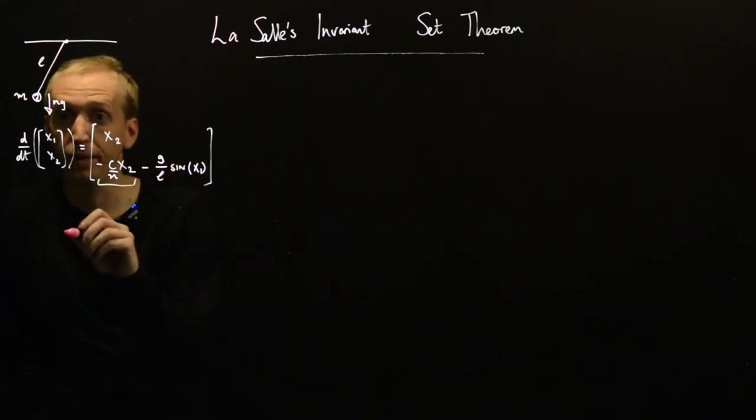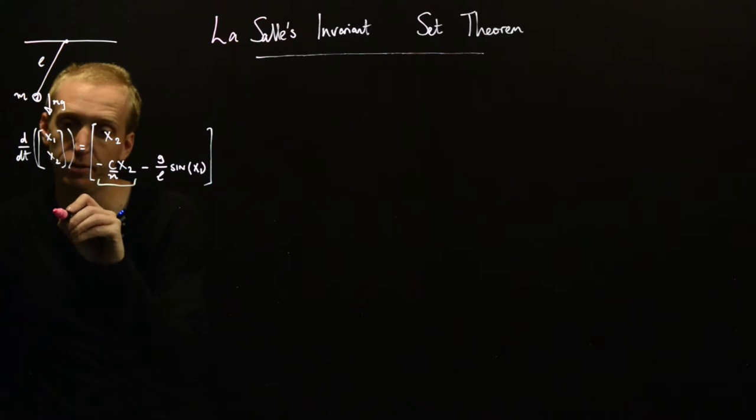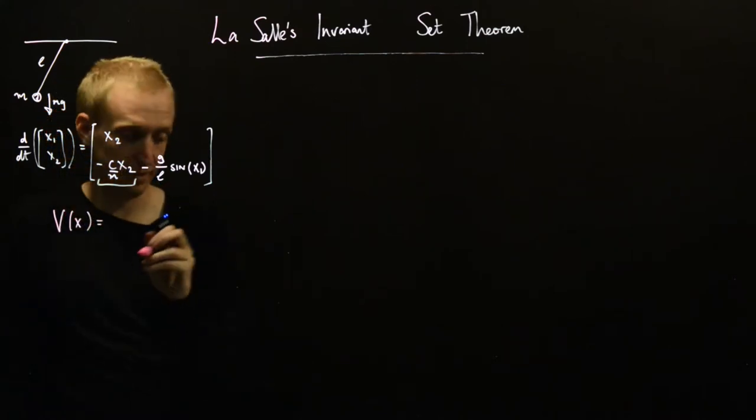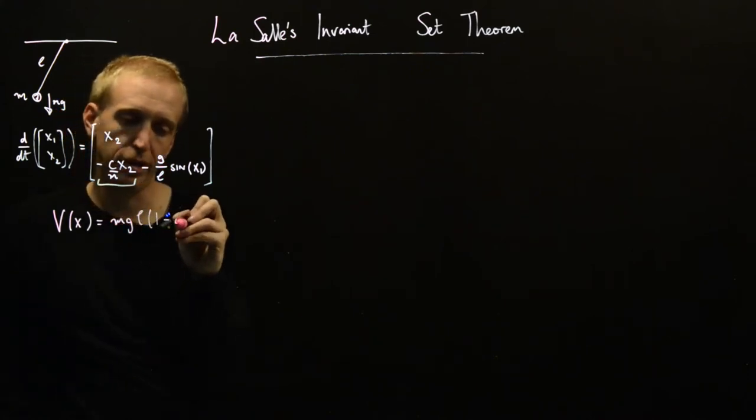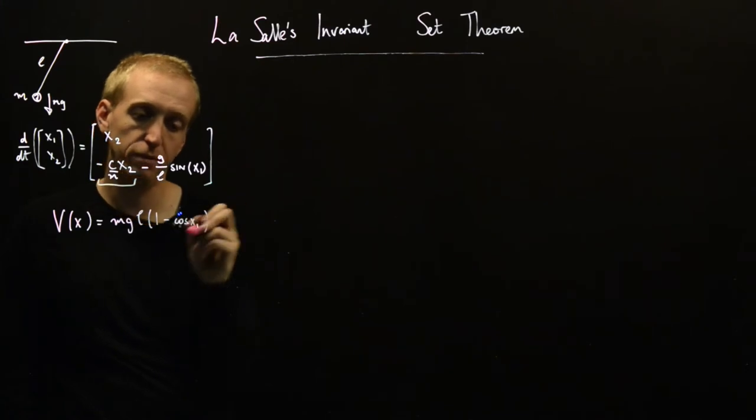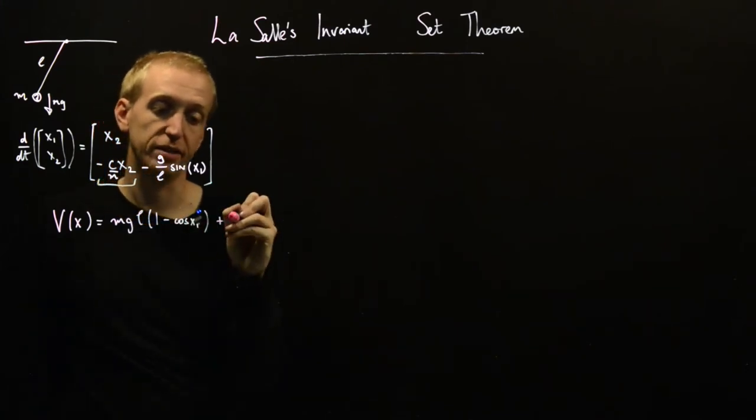So, as before, we're going to pick our Lyapunov function to be equal to the energy function. And as we saw last time, this is just MgL(1 - cos x1), the potential energy, plus the kinetic energy.